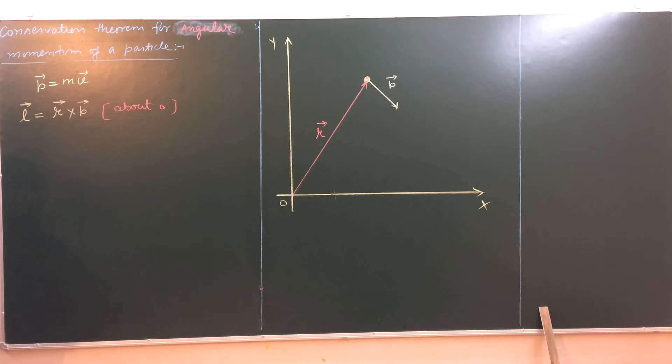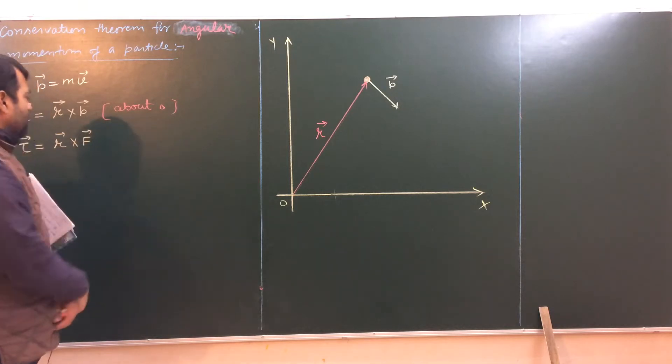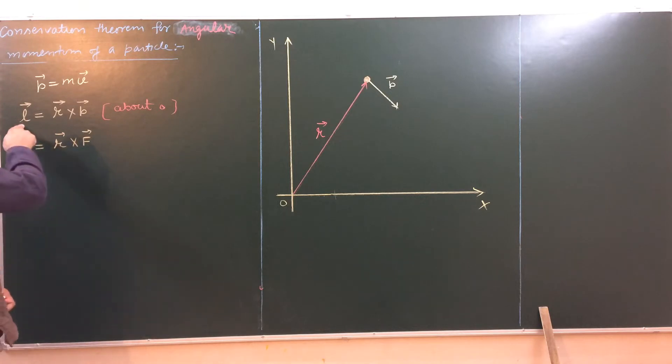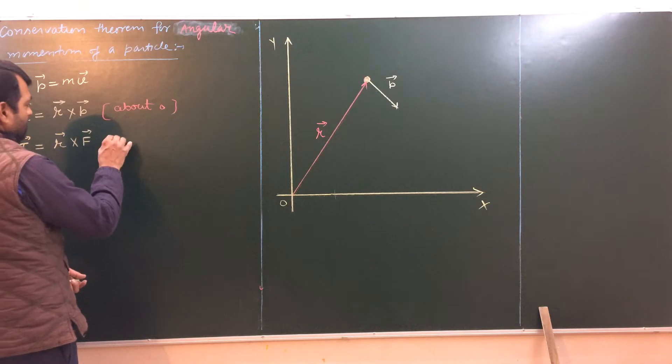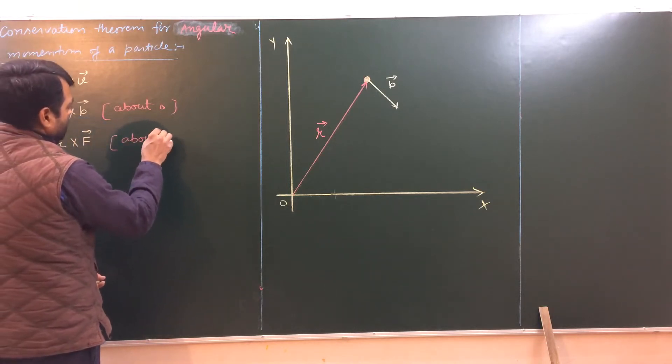And here we can also define one more dynamical variable for this particle, that is torque. Torque is the moment of force. It is the cross product of the position vector about this point o and the force which is acting on the particle. This l is also known as moment of force. Again, we have to write about this, about o.